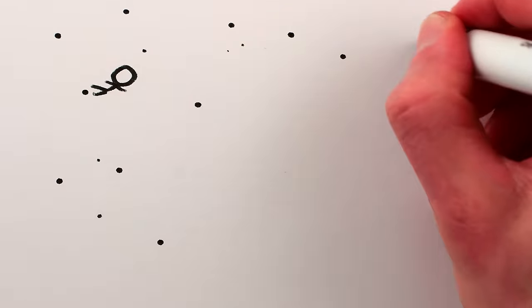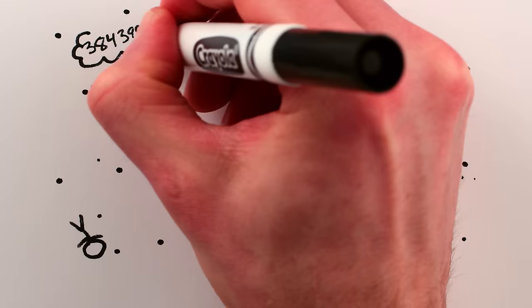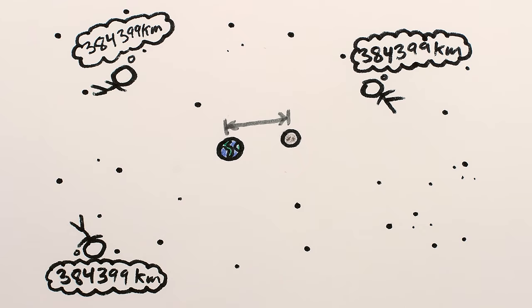Literally. Facts that remain true from many perspectives throughout the universe, like perhaps that the distance between the Earth and Moon is 384,399 kilometers, are literally more universal than a fact that only holds true at a single place and time, like that the angle between the Moon and Earth is 150 degrees.